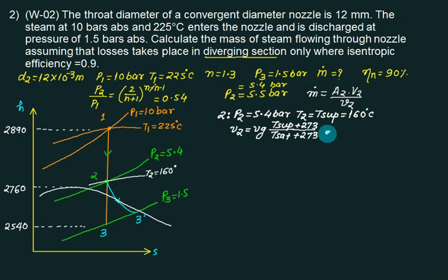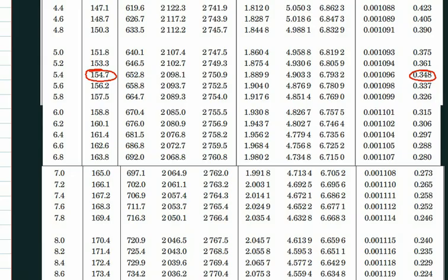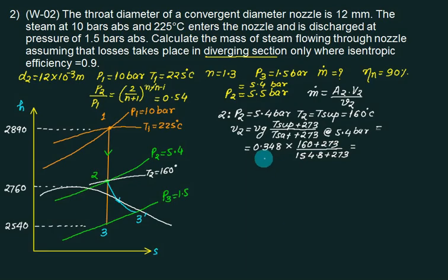At 5.4 bar, open your steam table. See 5.4. Substitute this value and find out V2 first. So this value is T sat. And this value equals to? Only two values at 5.4. So Vg is 0.348 and T sat is 154.8. From this calculate V2.